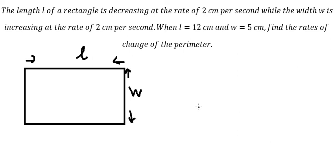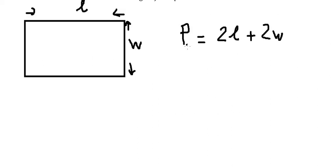The formula for perimeter is P = 2L plus 2W. Now if we take the first derivative for both sides, it should be like this.